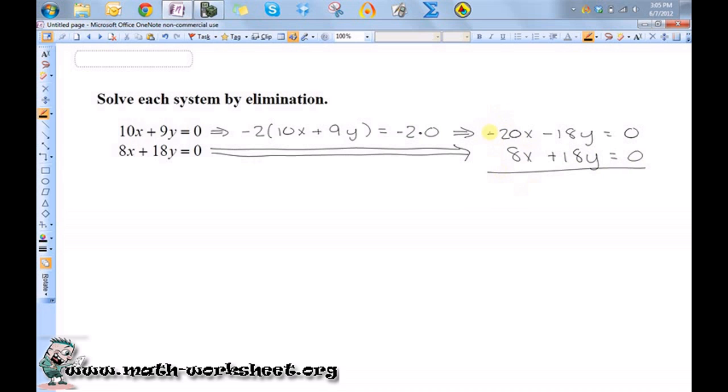So when I add column by column, we'll see that this is equal to negative 12x and then is equal to 0. So negative 12x is equal to 0, so that means x is equal to 0.